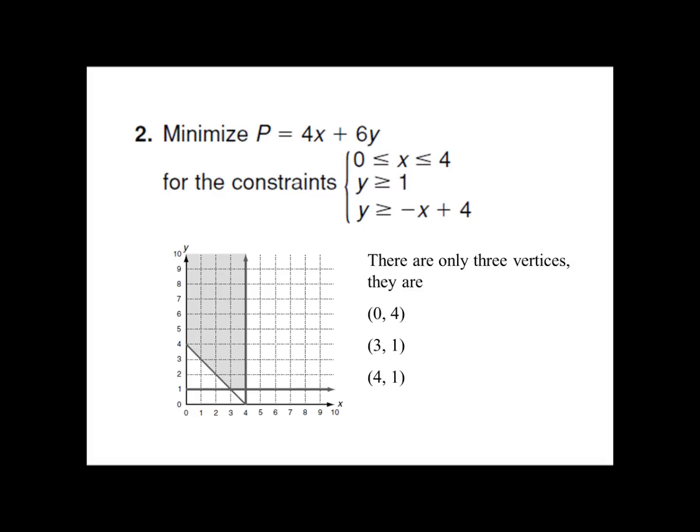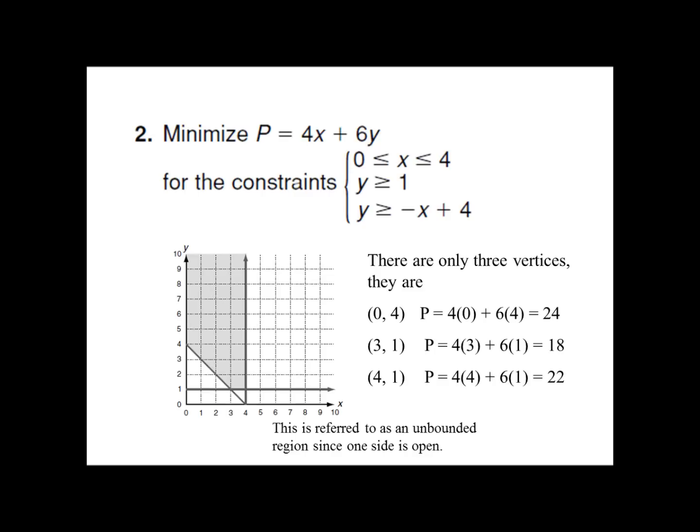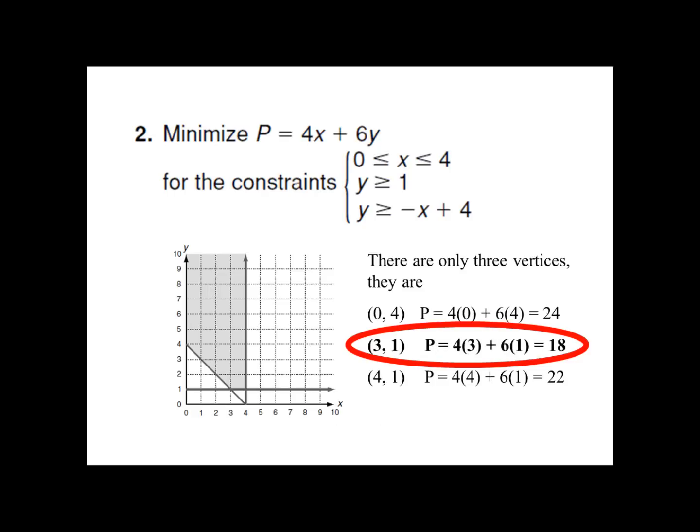This region is what we refer to as unbounded — it only has three corners, with no corners at the top. Those arrows keep going up forever. So it's probably a good thing that they ask me to minimize P, because if they wanted me to maximize it, there's probably no maximum. I plug in my three points — (0, 4), (3, 1), and (4, 1) — and notice that my minimum value is at (3, 1). Looking at the question, they want me to minimize P, so my answer would be 18. If they asked where is it minimized, my answer would be the point (3, 1).